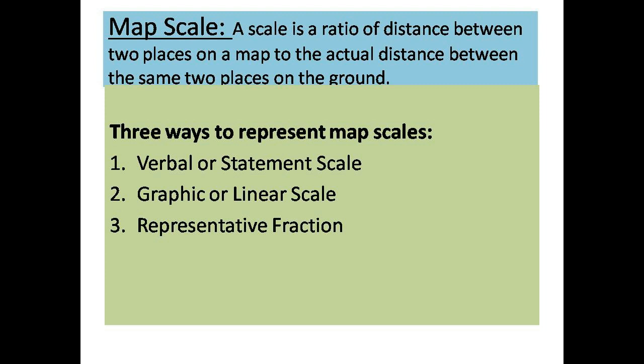A scale is a ratio of the distance between two places on a map to the actual distance between the same two places on the ground. There are three ways to represent map scales: one is verbal or statement scale, second is graphic or linear scale, and third is representative fraction.